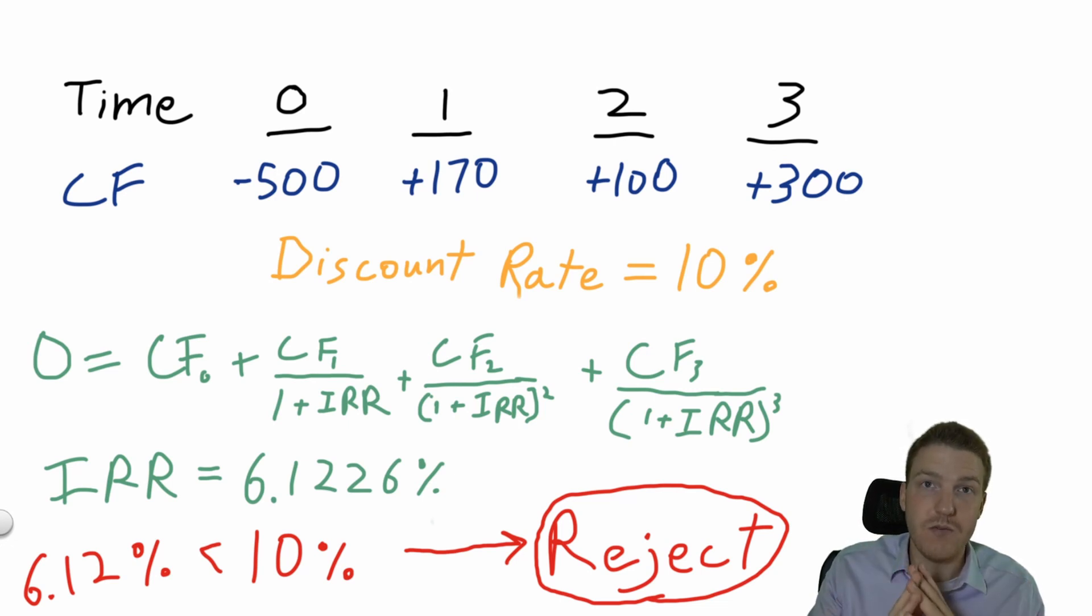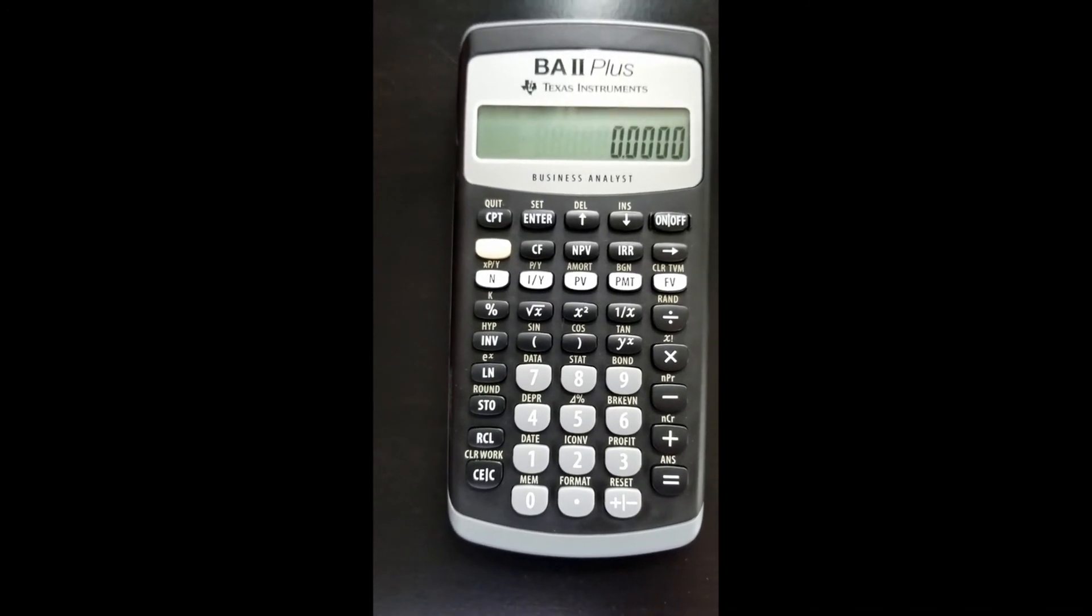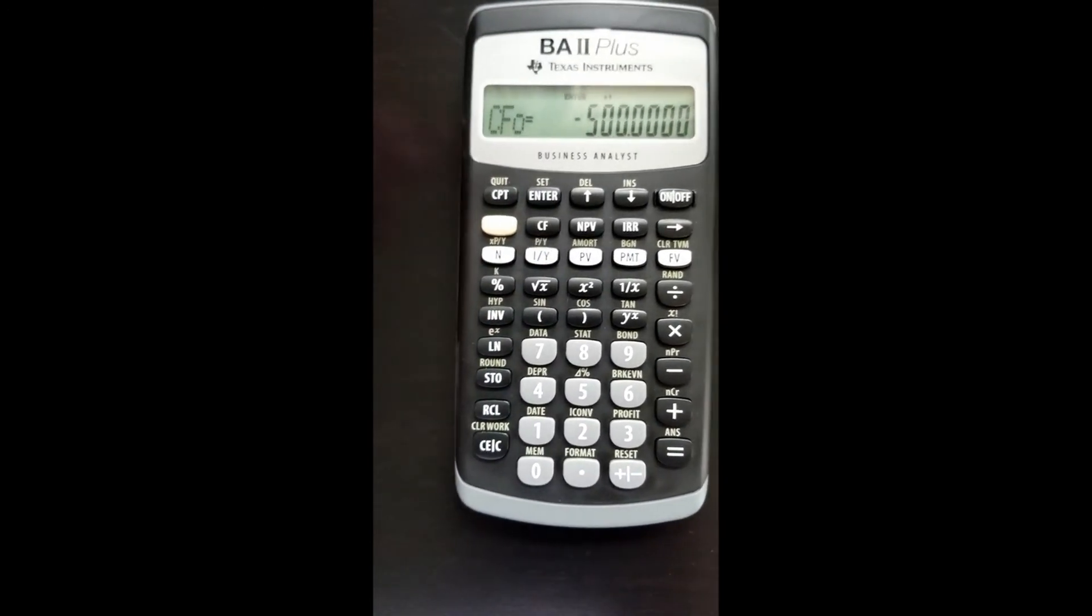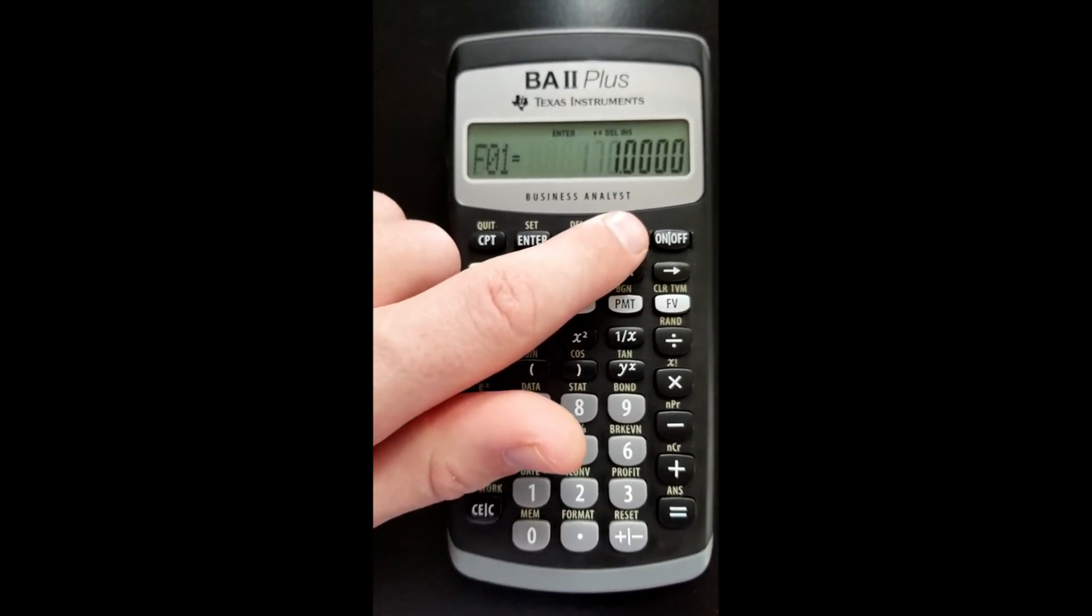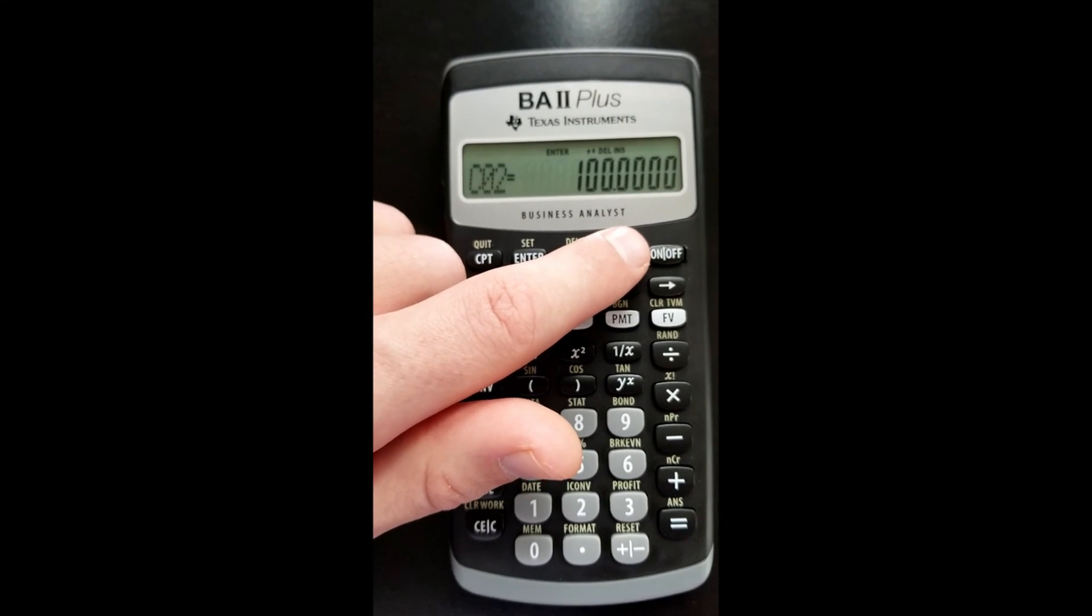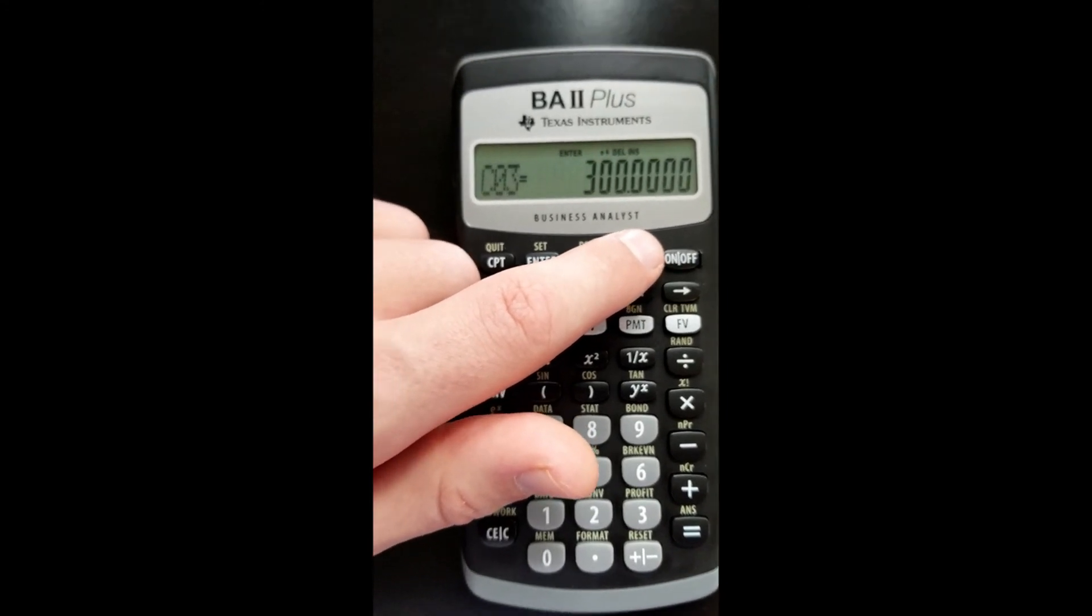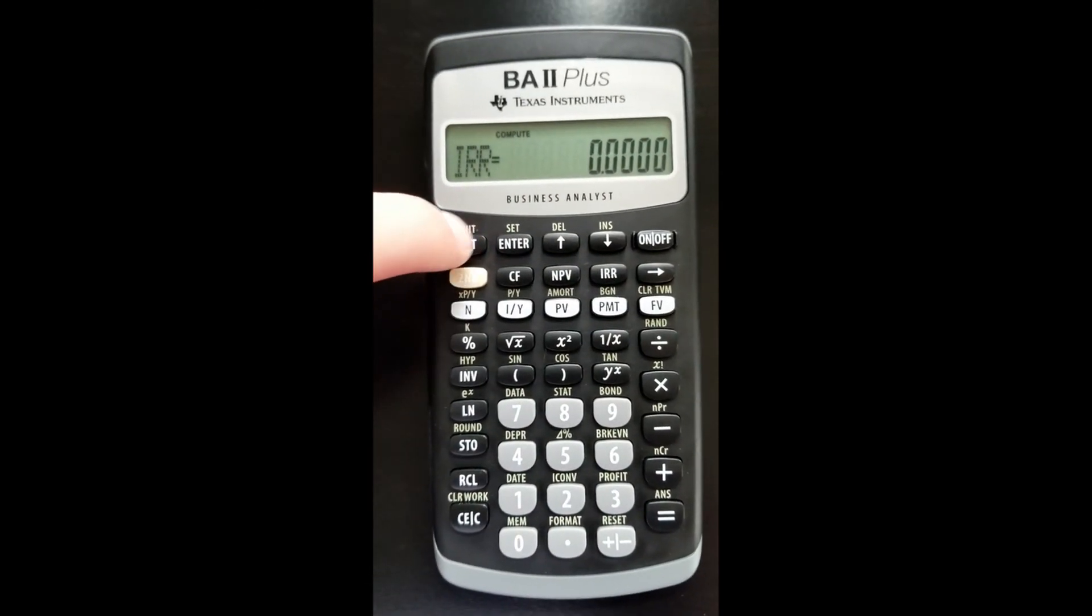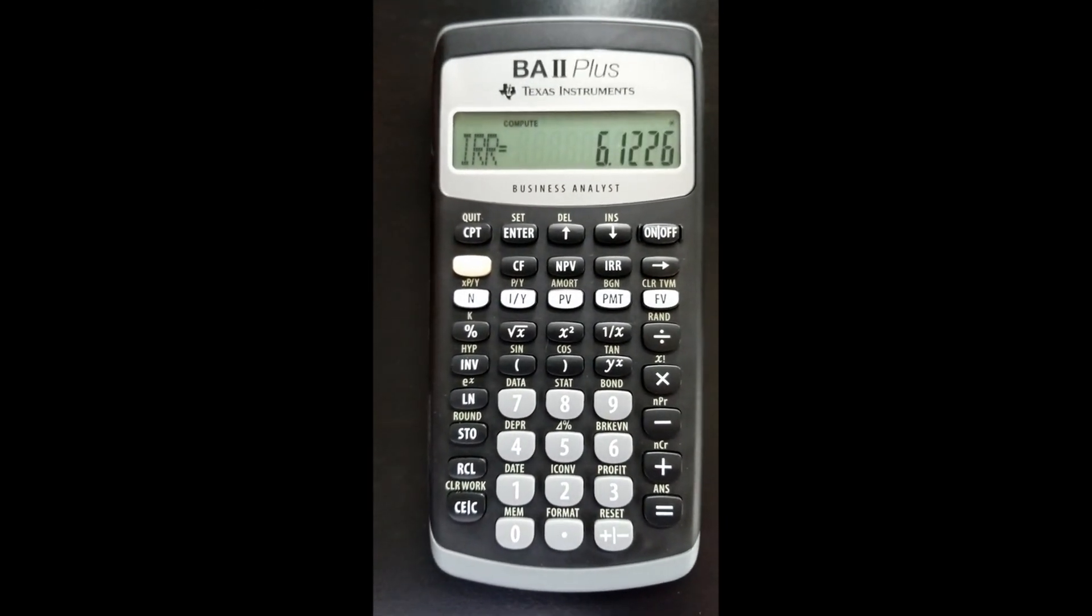In order to calculate IRR, you're going to do the exact same steps that we did before. Cash flow: put -500 in there as we did before. 170 is cash flow one, 100 is cash flow two, and 300 is cash flow three. Then you're going to go to IRR and hit compute.